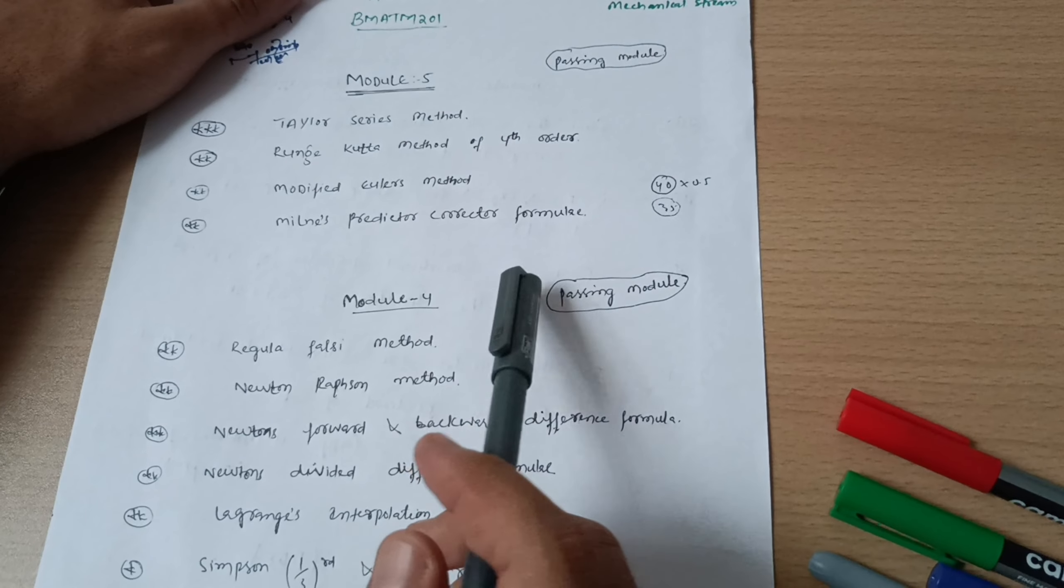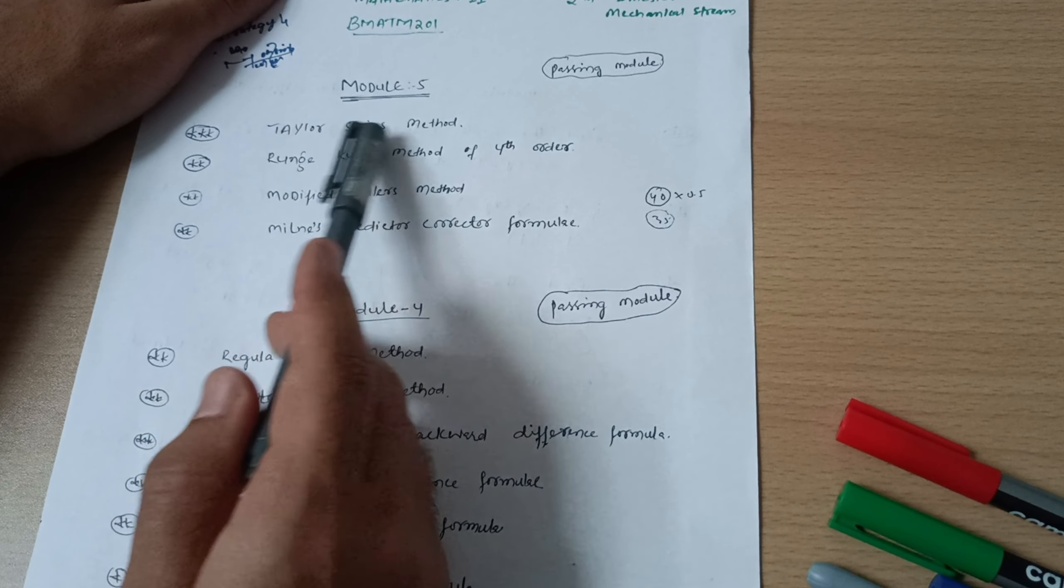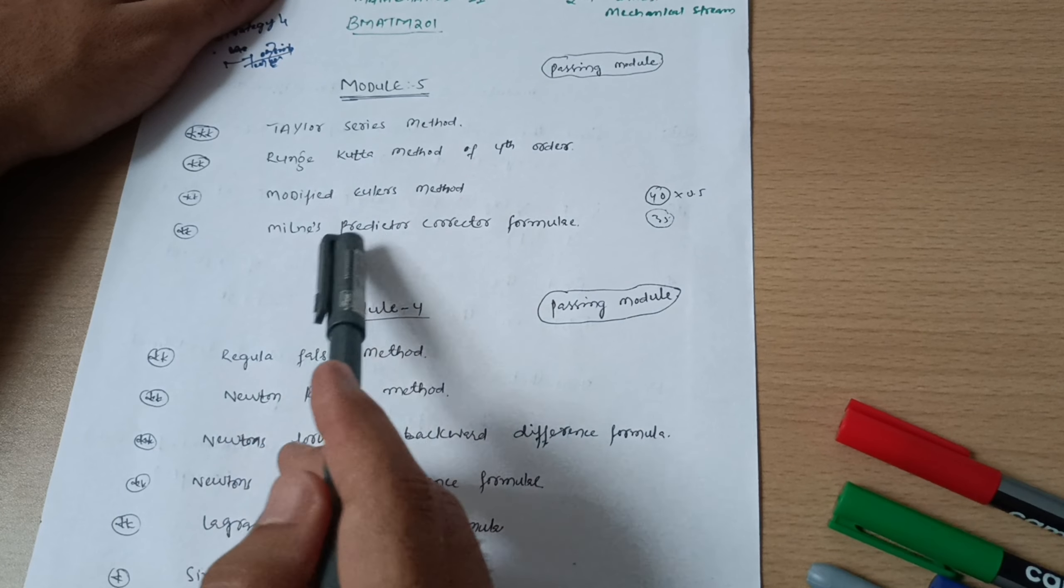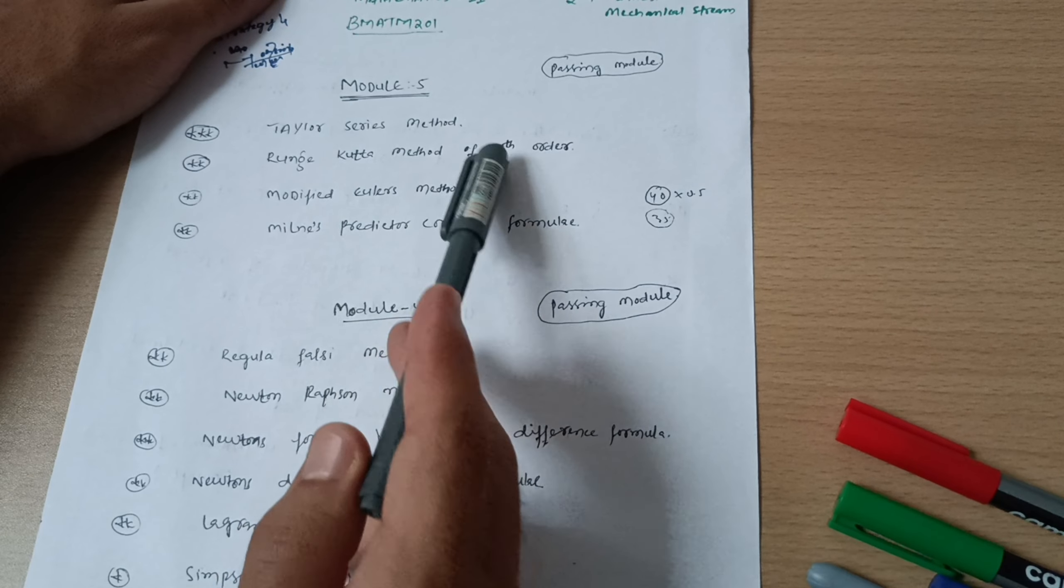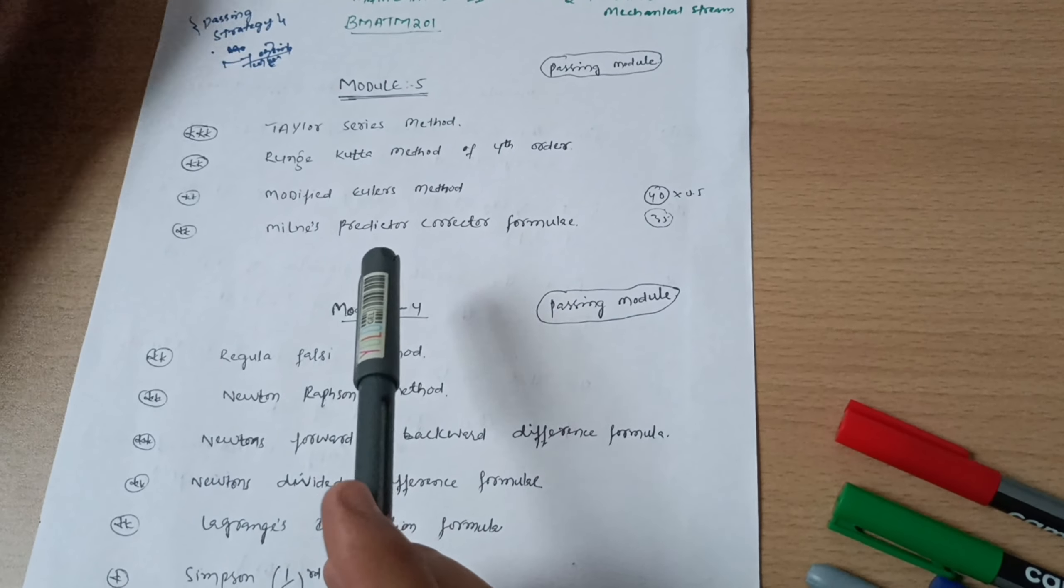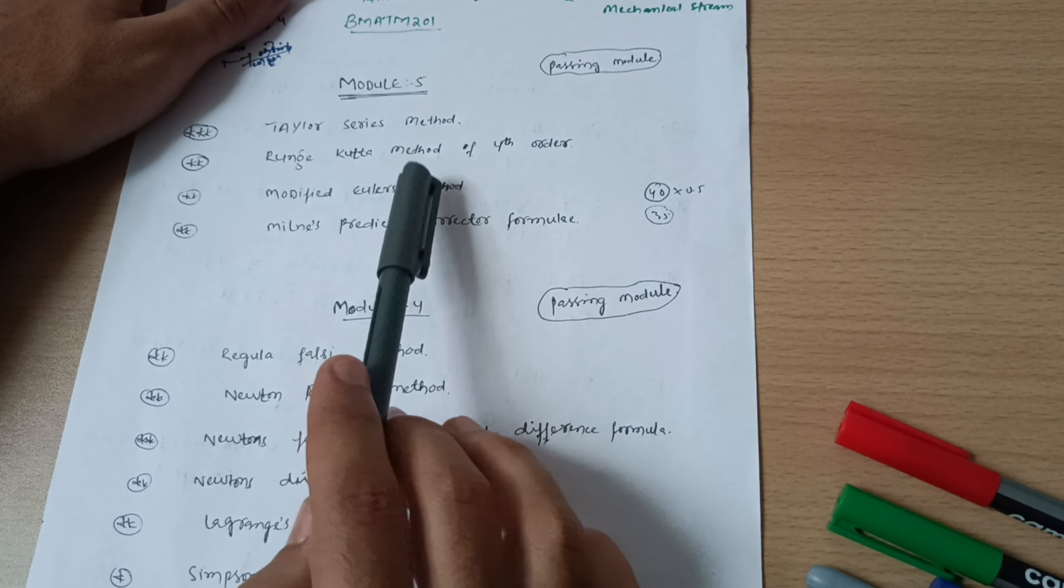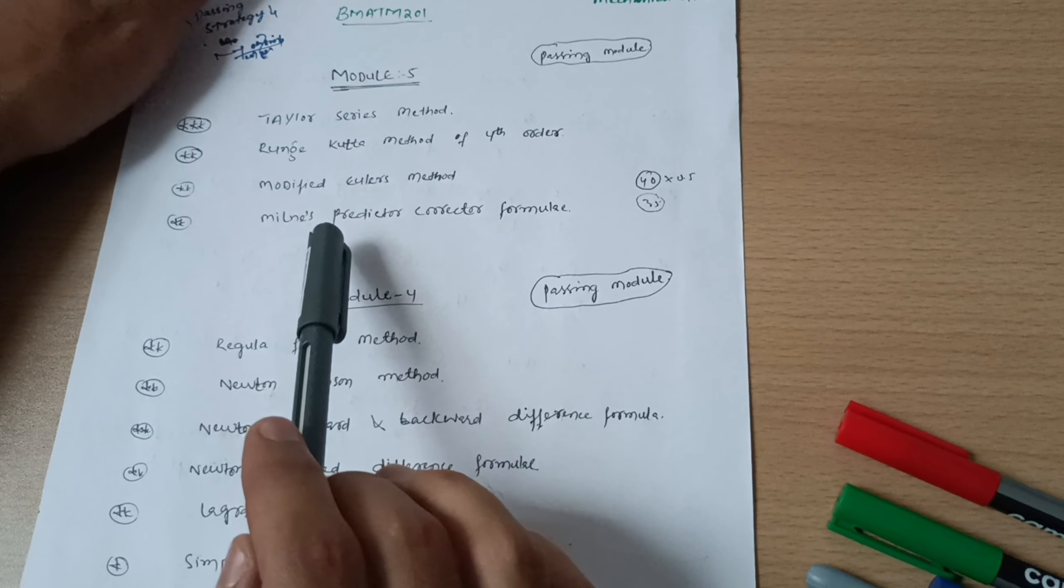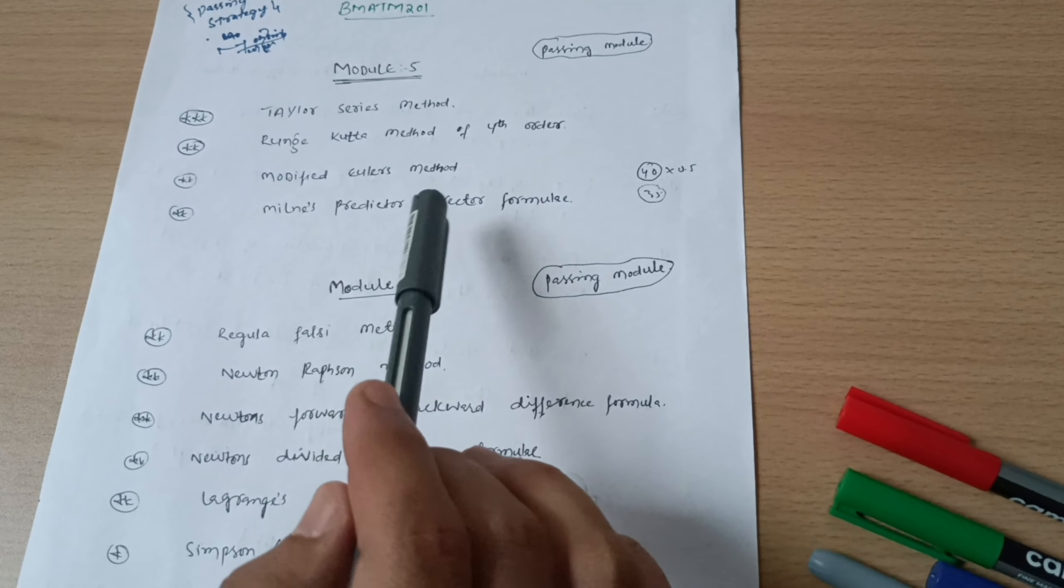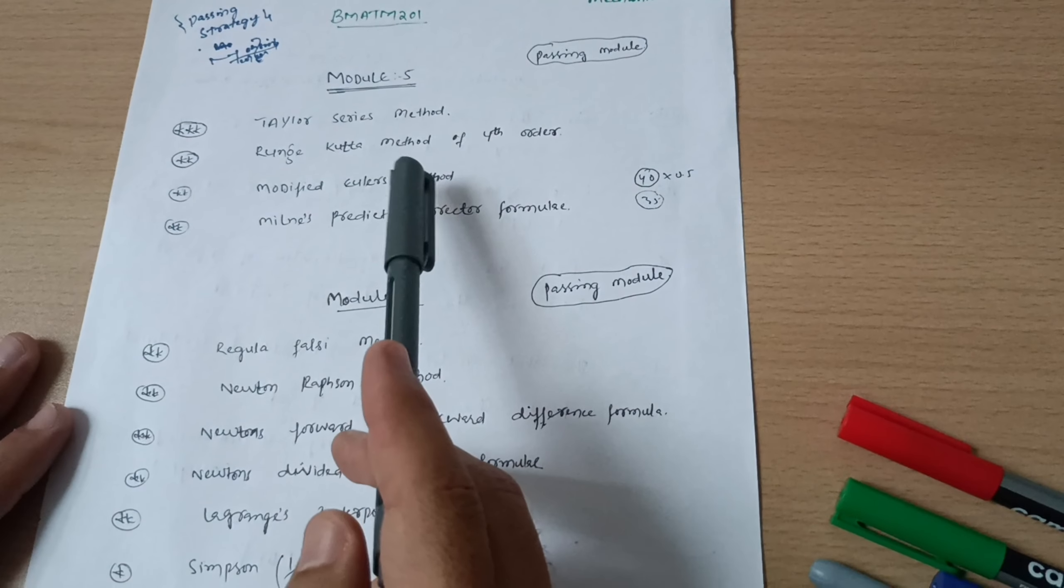In Module 5 you have to cover four concepts: Taylor series method, Runge-Kutta method of fourth order, Modified Euler's method, and Milne's predictor-corrector formula. I have made separate videos for these topics, links in the description box. No need to remember the formulas, you will get the handbook in the examination, so you can easily copy those formulas.